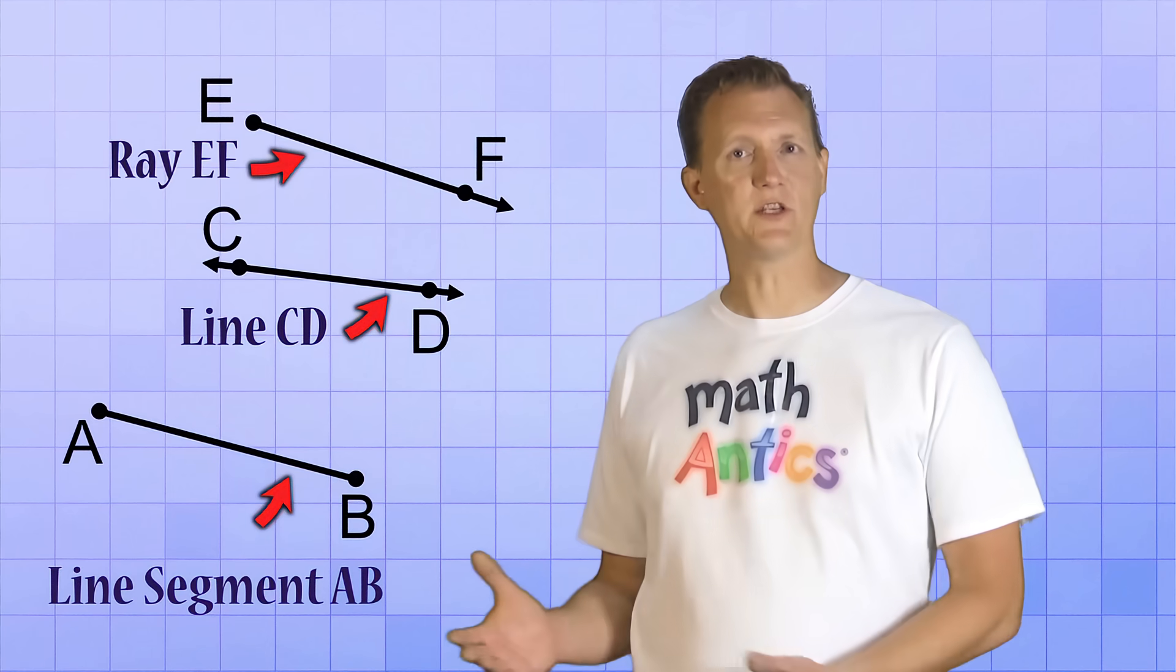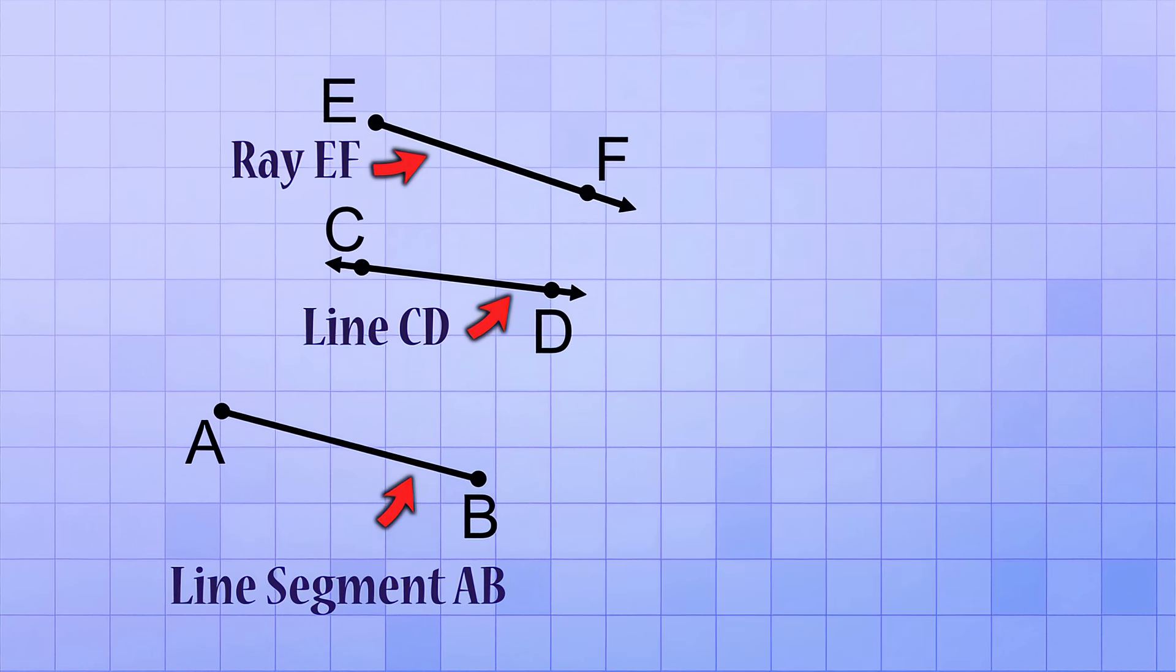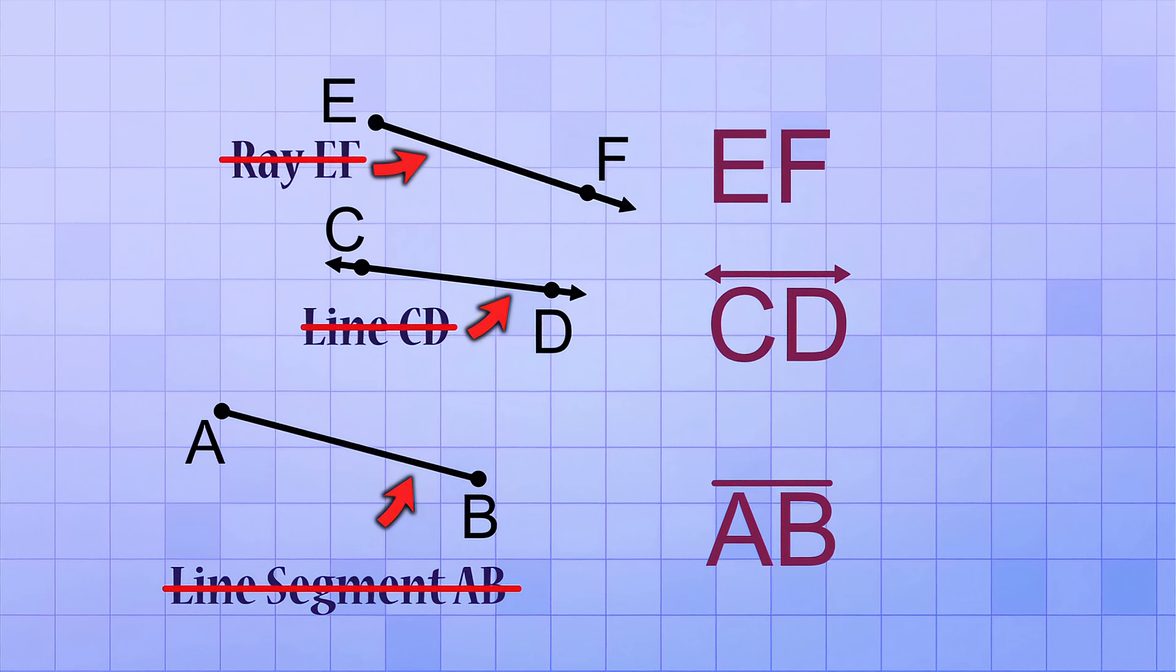In geometry, each of these three types of lines has a shorthand way of writing it. Instead of writing Line Segment AB, you can just write AB with a line over the top. And instead of writing Line CD, you can write CD with a double arrow line over them, like this. And finally, instead of writing Ray EF, you can just write EF with a single arrow line over them, like so.